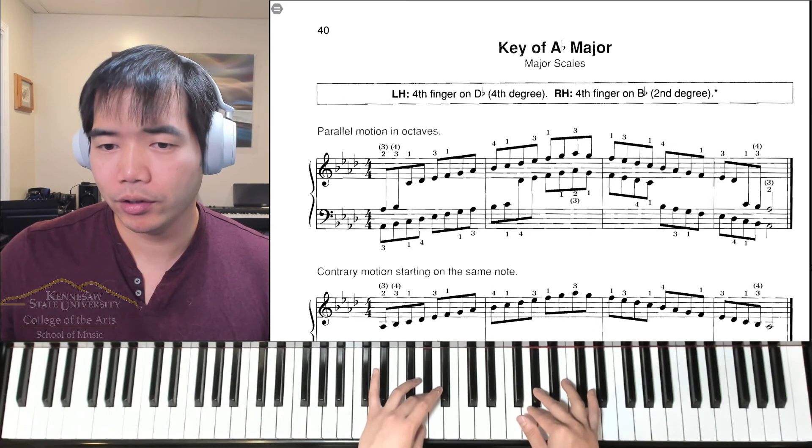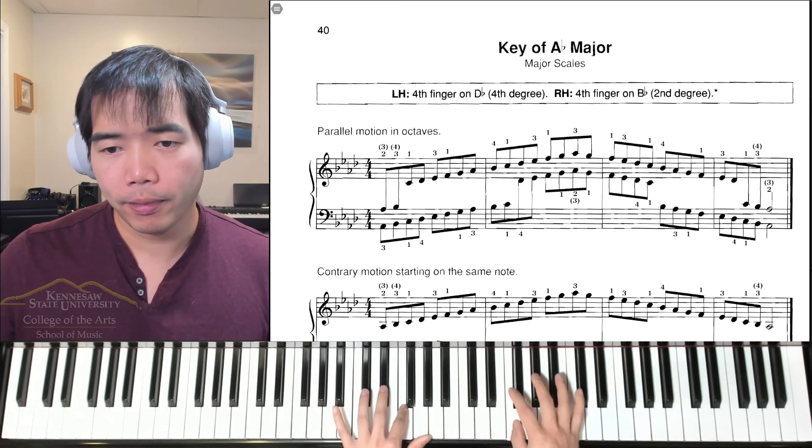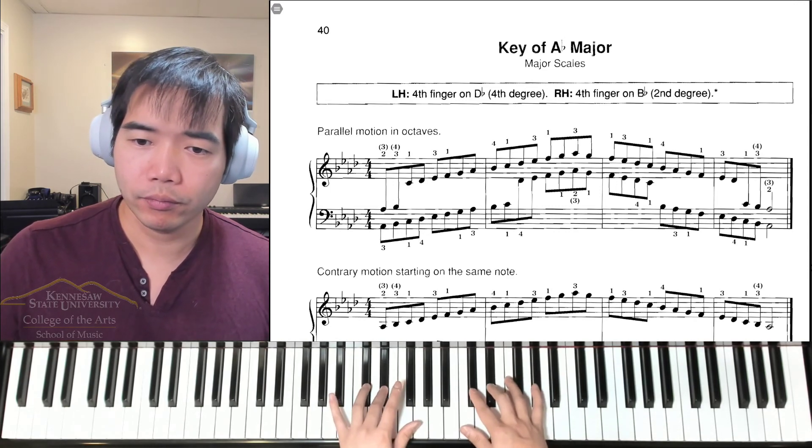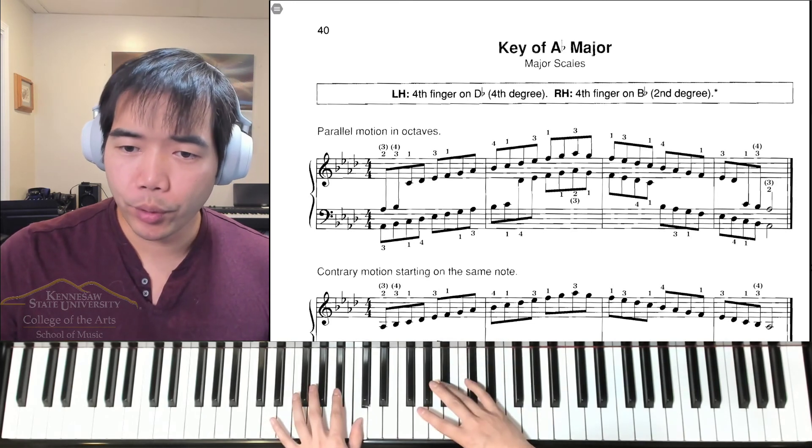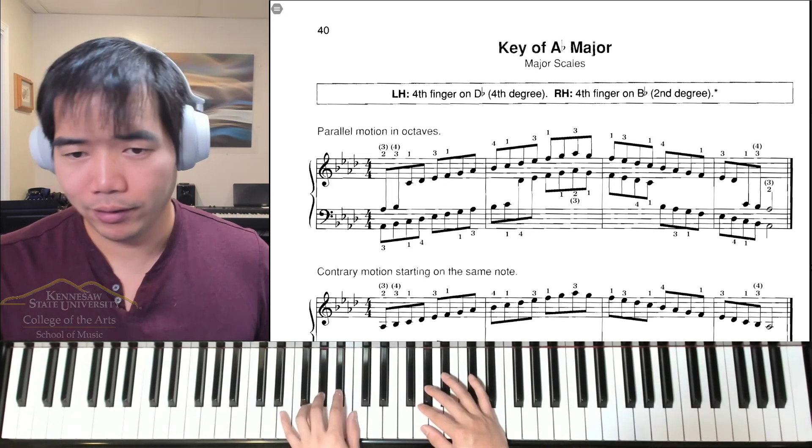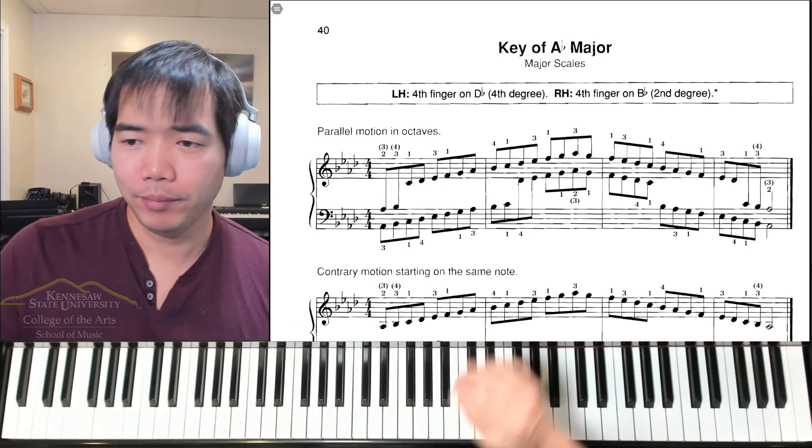Then both hands play third finger on A flat. Back down, second finger in the right hand, thumb in the left. Third fingers of both hands are on E flat. Thumbs on C. Cross the fourth finger right hand on B flat and A flat. And that is A flat major.